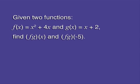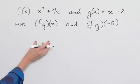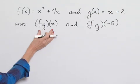Given two functions, f of x equals x squared plus 4x and g of x equals x plus 2, we're asked to find fg of x and fg of negative 5. Well, we need to understand the notation. This is an algebra of functions.